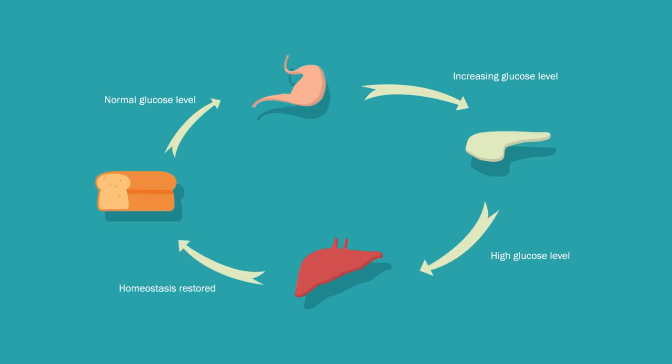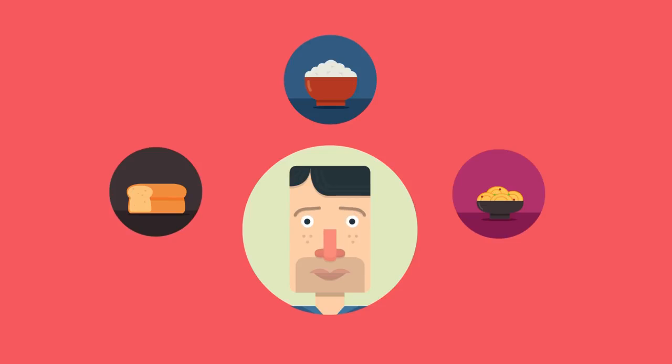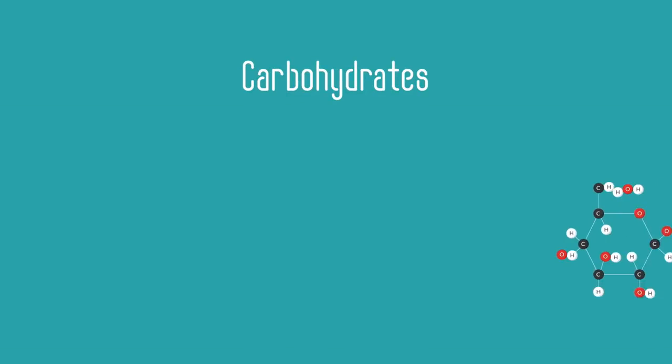When you consume a meal high in carbohydrates such as rice, pasta, and bread, this will cause your blood glucose level to increase. Carbohydrates are essentially long chains of repeating glucose monomer units, much like beads on a necklace.